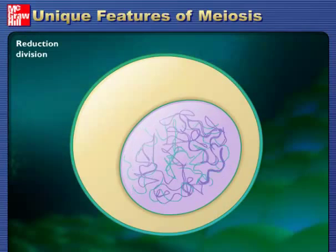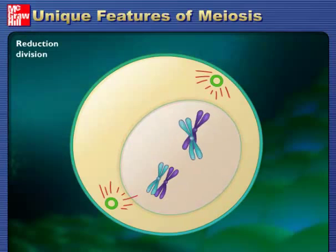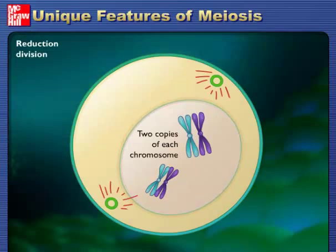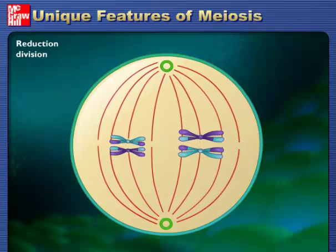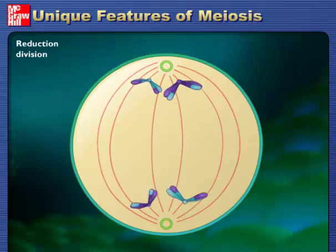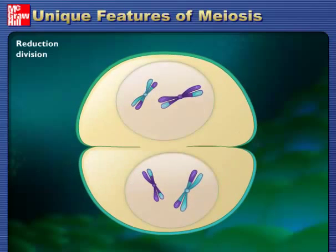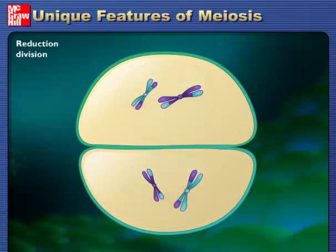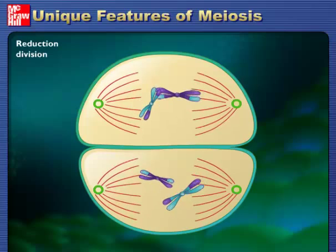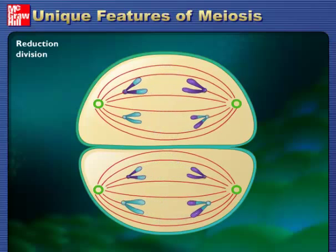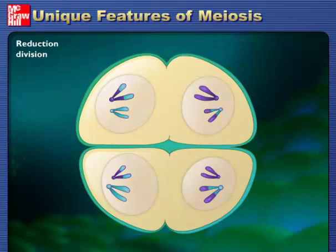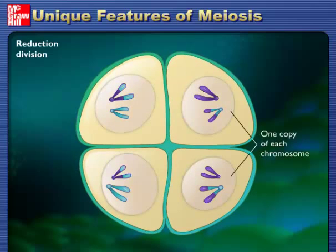The third unique feature of meiosis is a reduction division. At the end of meiosis, each cell contains only half the original complement of chromosomes. Because of the crossing over that occurs during the first division, the sister chromatids in meiosis II are not always identical. Omitting a chromosome duplication before meiosis II produces haploid gametes.